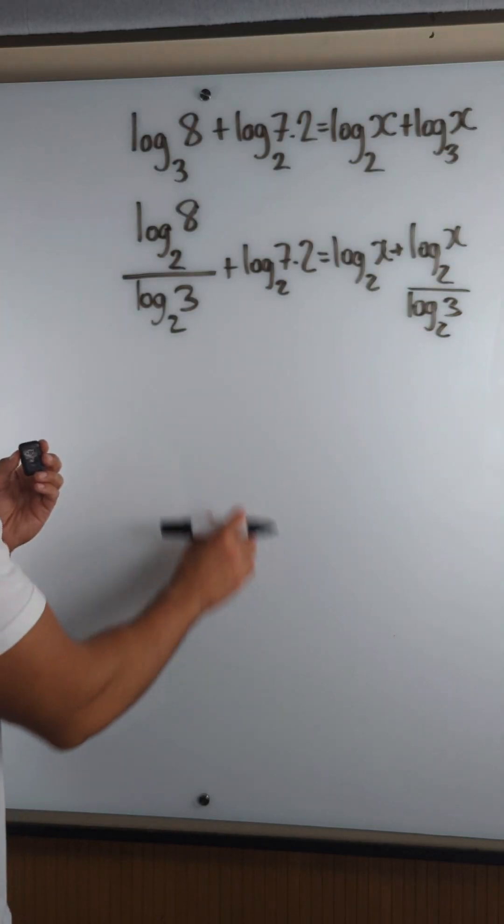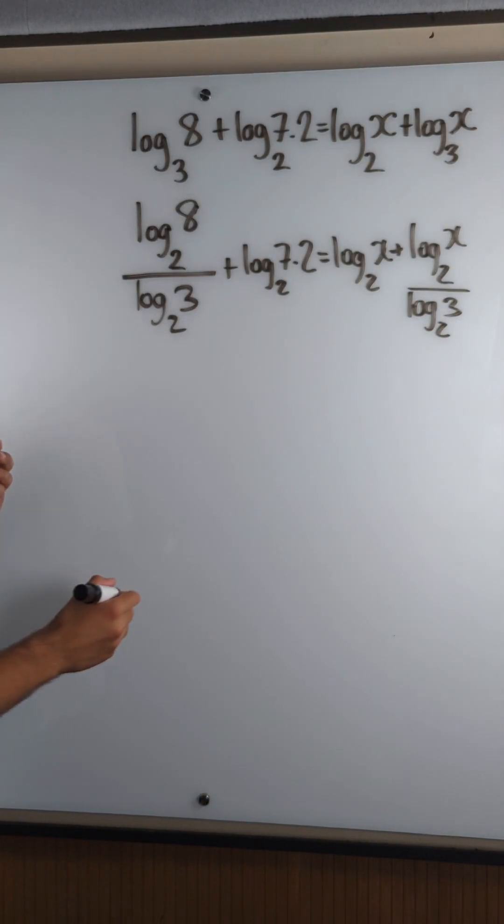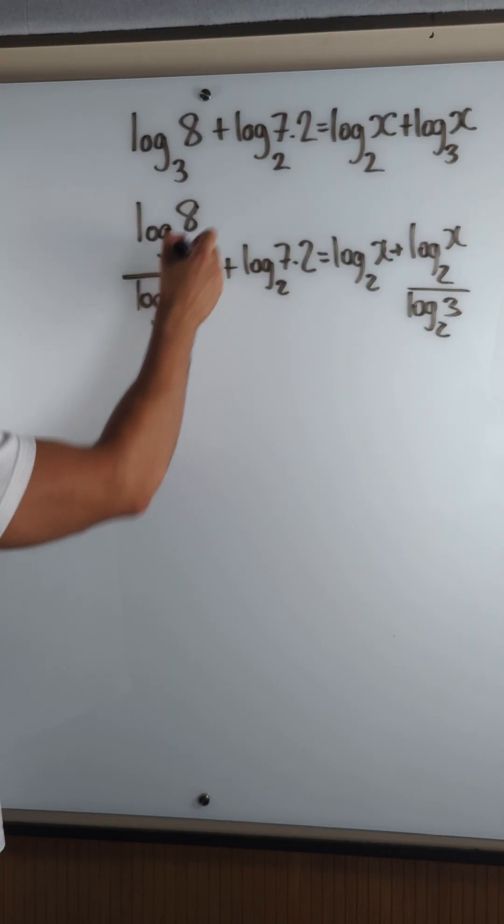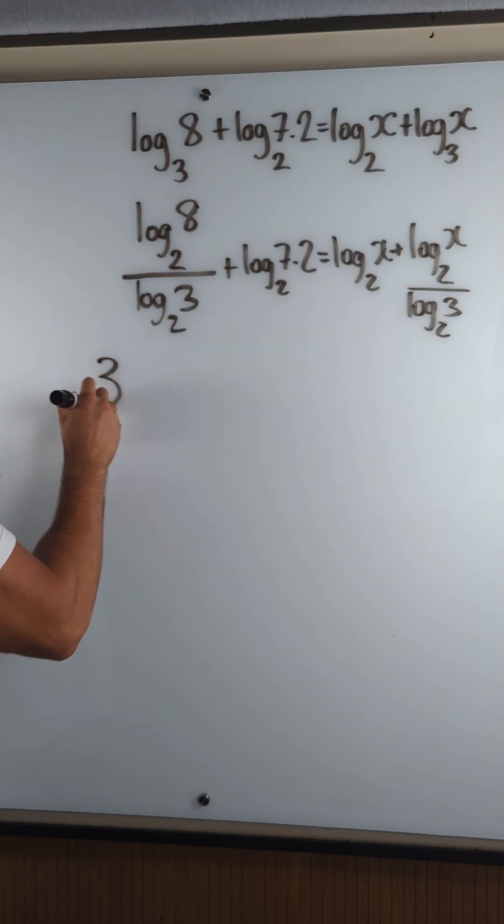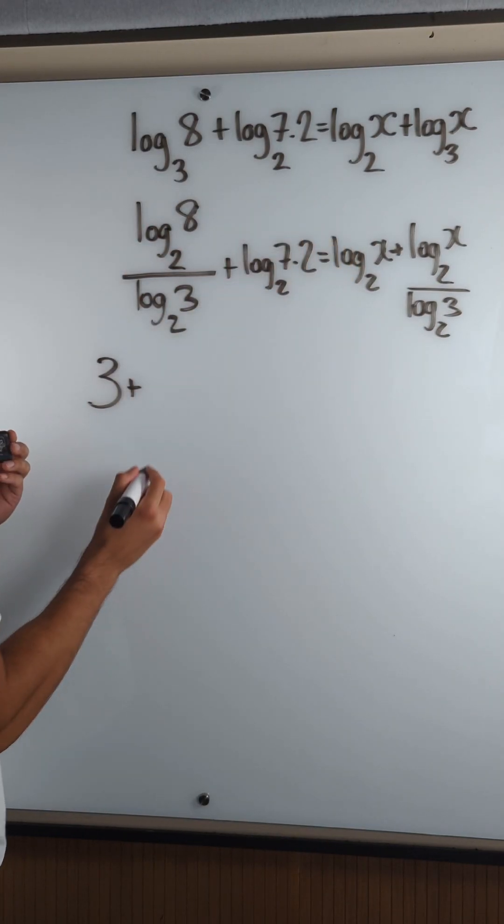Now the next thing I'm going to do is I'm going to get rid of all of these denominators. So, and also this is 3, right? So 3 plus timesing through by log base 2 of 3.